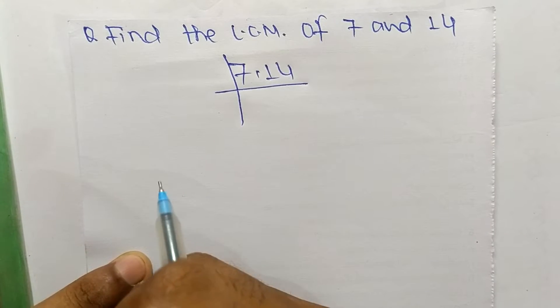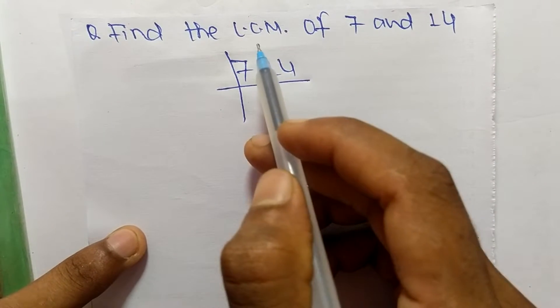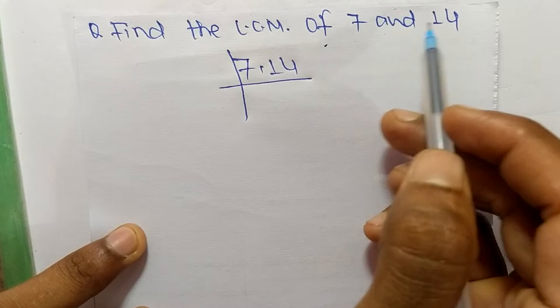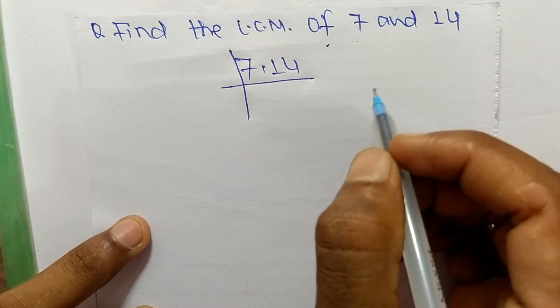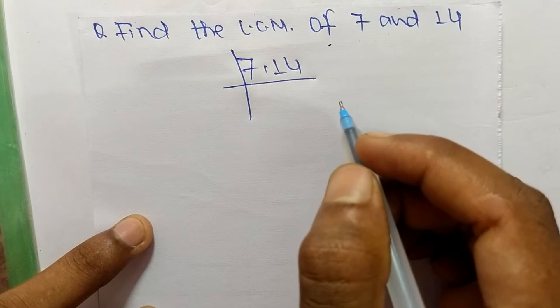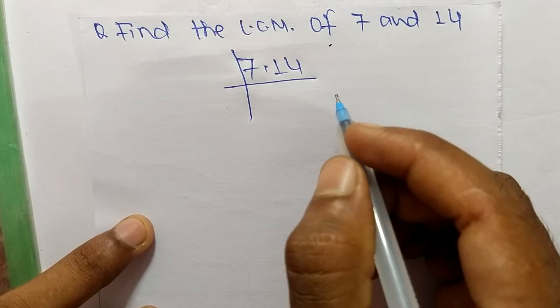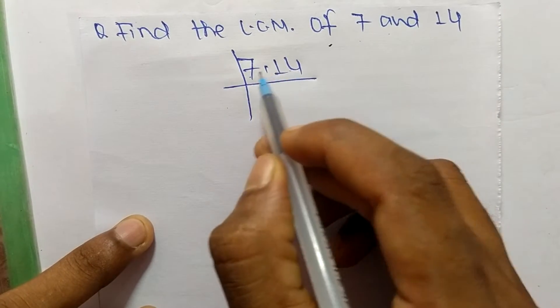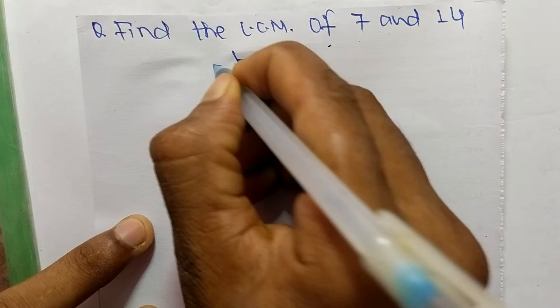So today in this video we shall learn to find the LCM of 7 and 14. To find LCM, first of all we have to choose the lowest number which can exactly divide both numbers. So the number is 7.